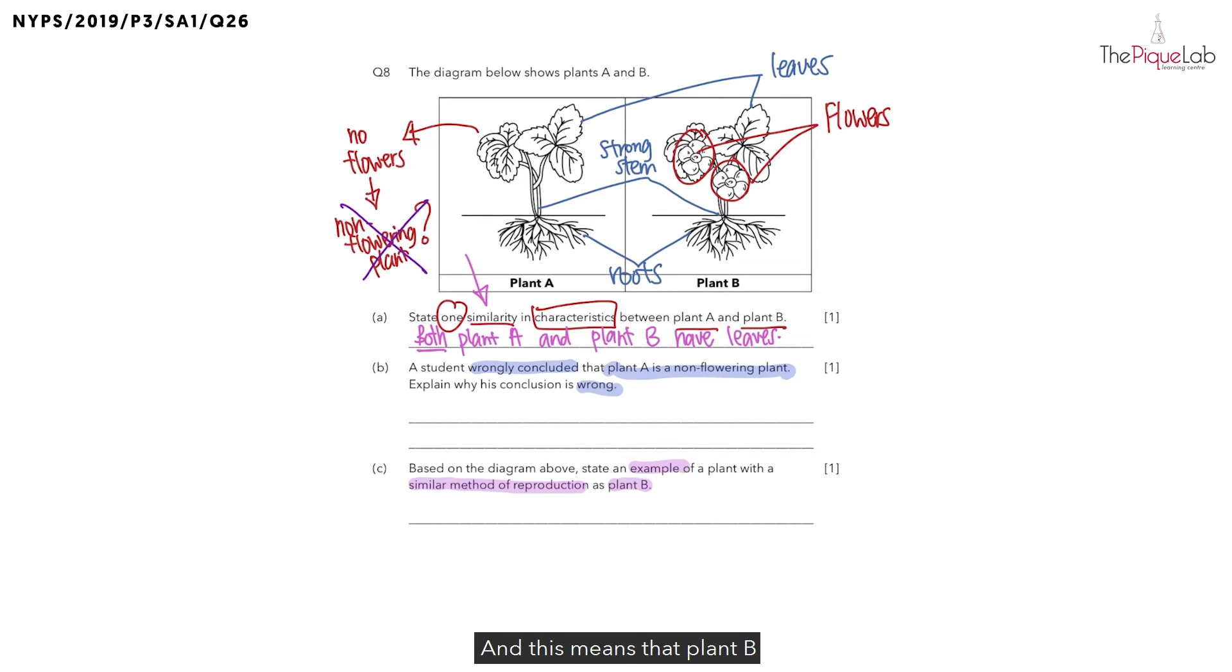And this means that plant B is a flowering plant. So how do you think a flowering plant reproduces? Let me give you a hint. These flowers on plant B, what would they develop into eventually? They would develop into fruits. And if you cut these fruits open, what do you see in these fruits? The fruits contain seeds. So this suggests to us that the flowering plant reproduces by seeds.